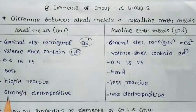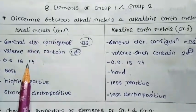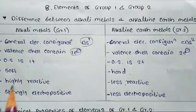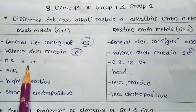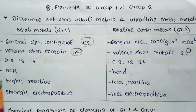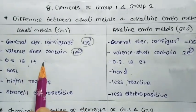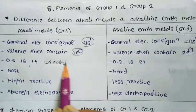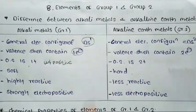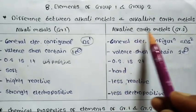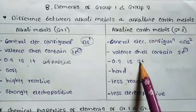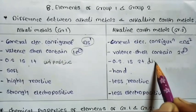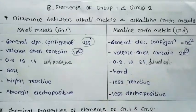Third point: oxidation state. The oxidation state of alkali metals is +1. That is, alkali metal elements form univalent or unipositive ions. The oxidation state of alkaline earth metals is +2. That is, alkaline earth metals form divalent or dipositive ions.